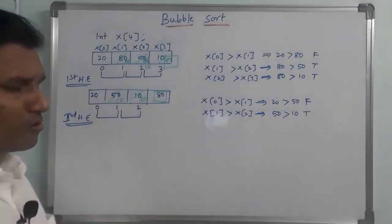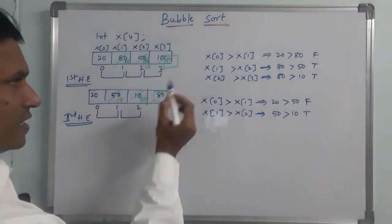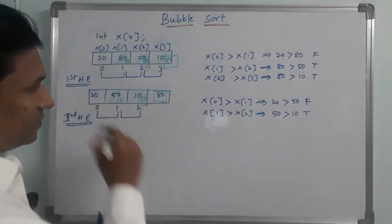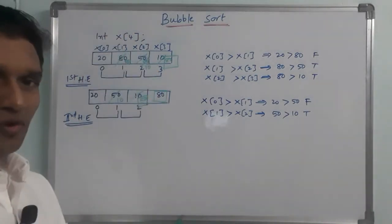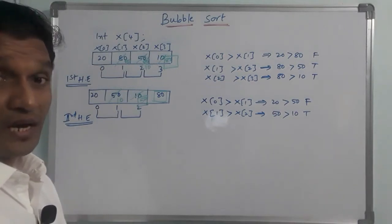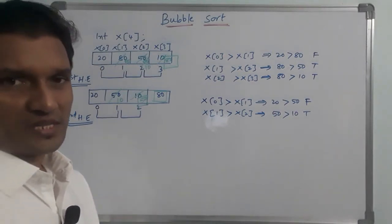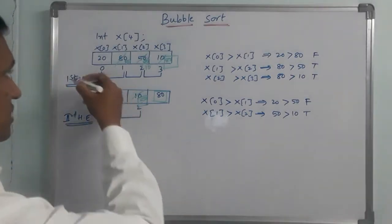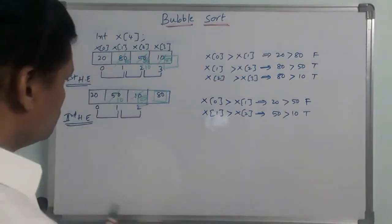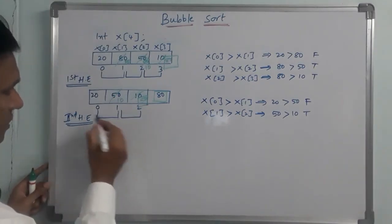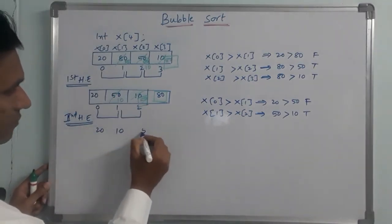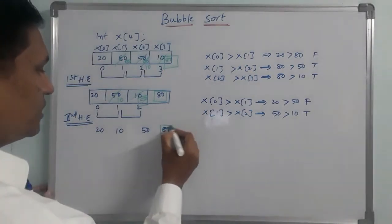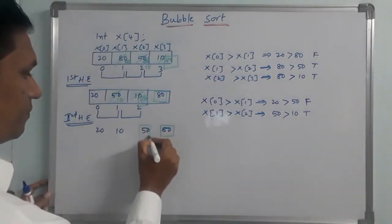After the second pass, the second highest element 50 is now fixed. The output after the second pass is: 20, 10, 50, 80.